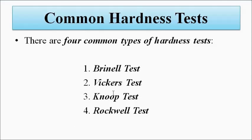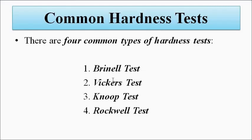Four common types of hardness tests are performed. The first is the Brinell test, the second is the Vickers test, the third is the Knoop test, and the fourth is the Rockwell test. For all four tests, the indenter materials are different, the structure is different, and as a result the empirical hardness numbers and their calculations are also different.